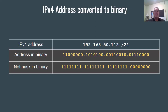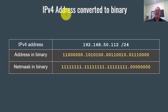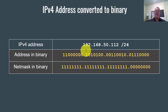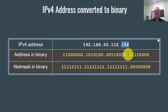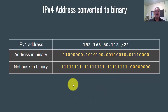To understand subnetting, you need to be able to convert IP addresses and subnet masks into binary. Here is the number 192.168.50.112 with a slash 24 subnet mask — convert it into binary.